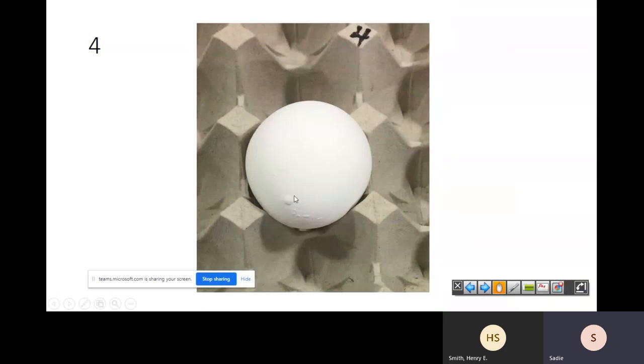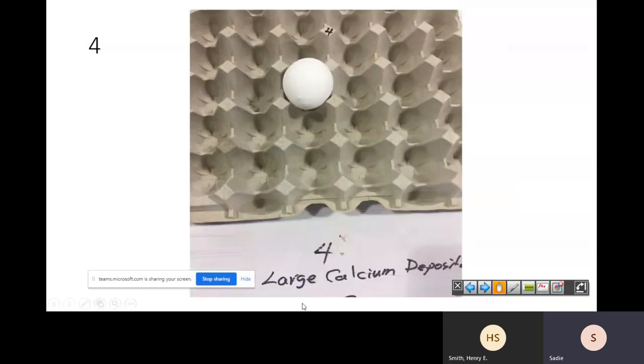Definitely going to have calcium deposits here. I'm not seeing anything else on the egg. It might have some shape issues, maybe like misshaping because it doesn't look like a circle egg, but I don't know if he took a picture more at an angle. But we definitely can see the calcium deposits here. And that one is just large calcium deposits.